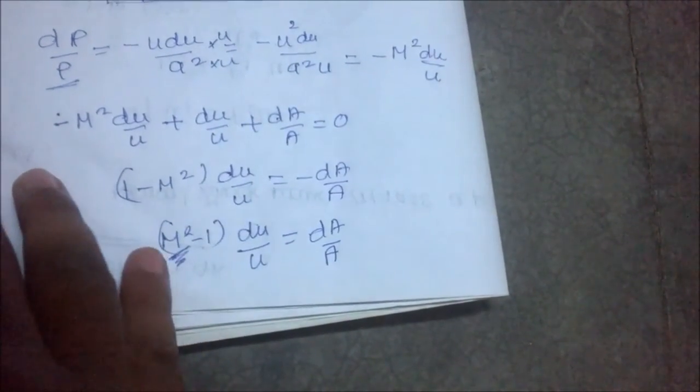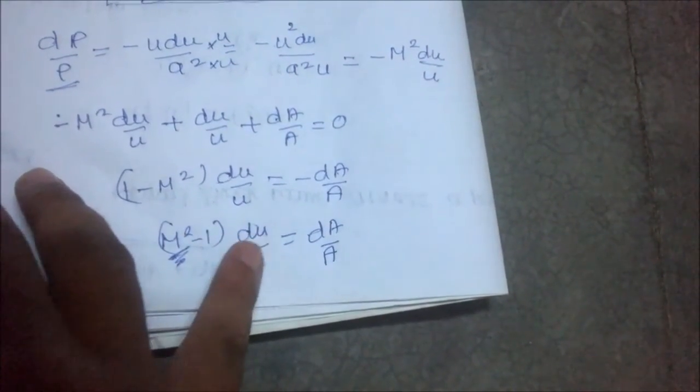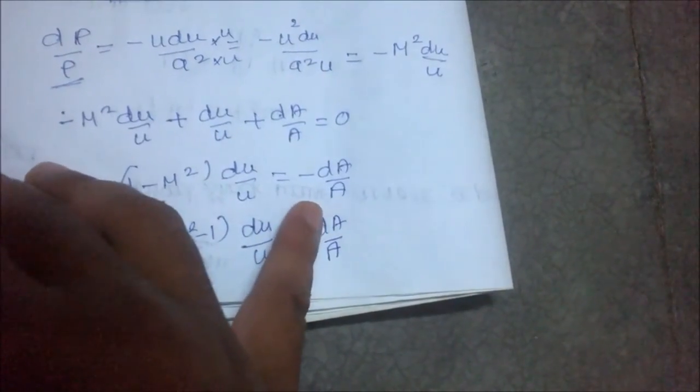If M is greater than 1, then the velocity ratio increases with the area ratio.